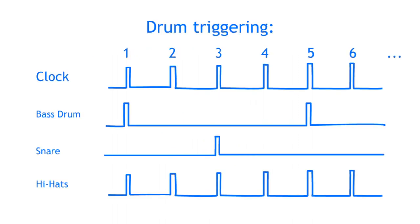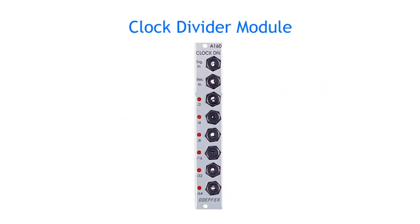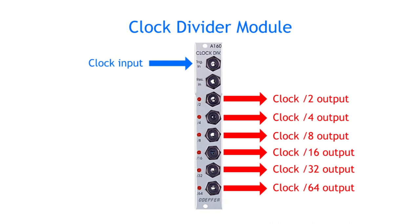If you want to trigger drums for example, you might want a bass drum every four beats, but a hi-hat on every beat. To do that, you will need a clock divider module, which usually has one input and several outputs, which output a high signal at a different division of the incoming clock speed.